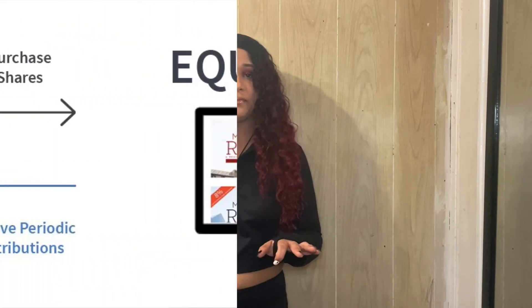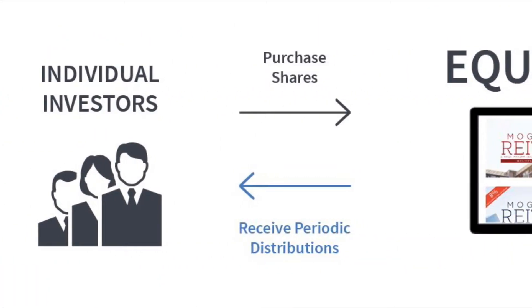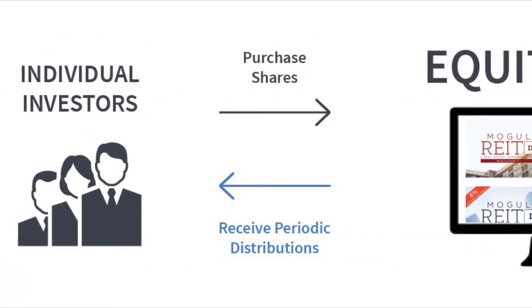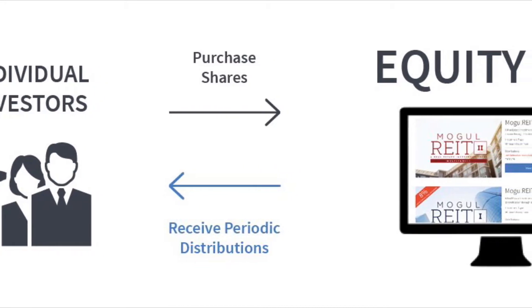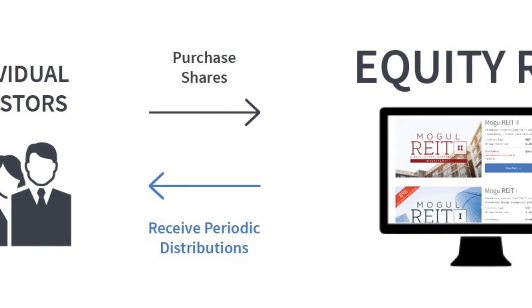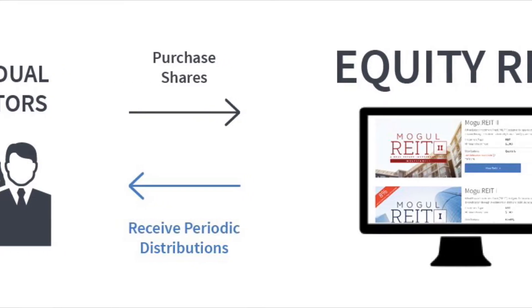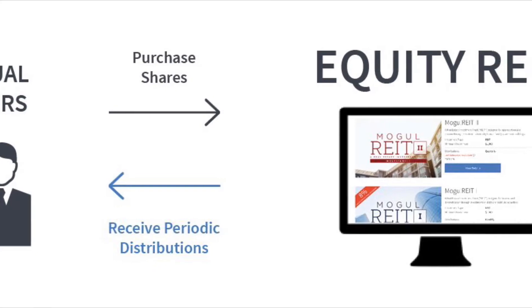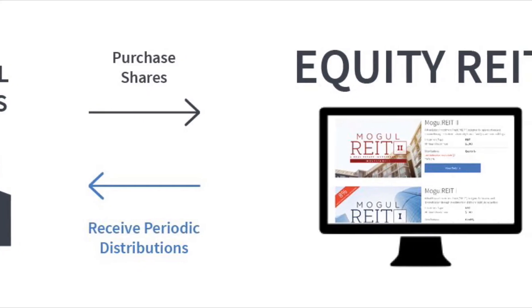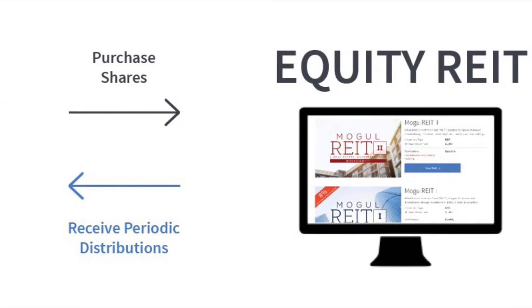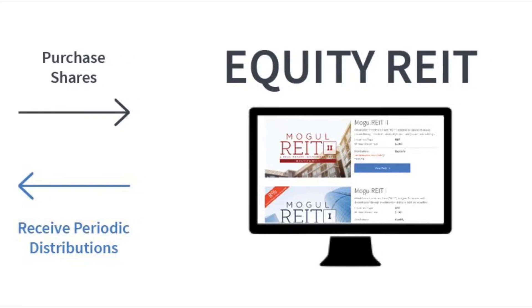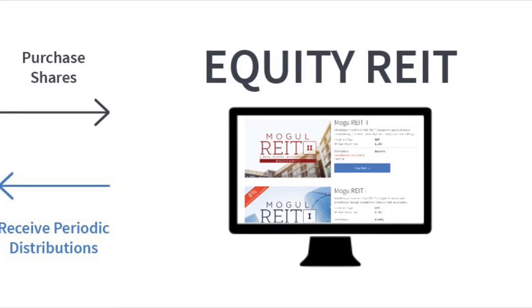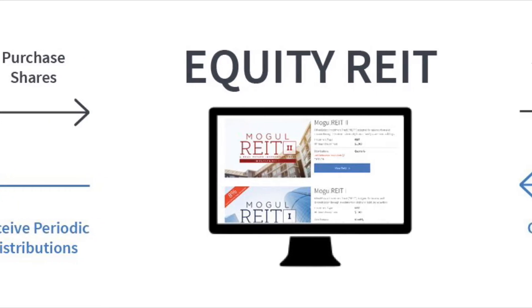Here we have the equity REIT graph. It starts off with us as individual investors — whether it's me, you, grandma, grandpa, your friend, your uncle, your cousin, your mother, and so on. We are able to purchase shares of that equity REIT, whether it's residential or commercial, allowing us to acquire real estate — and real estate, of course, is assets over liabilities.